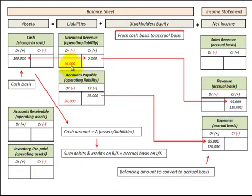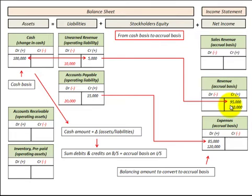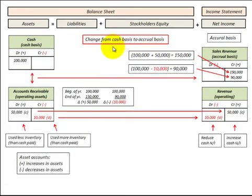We can do the same thing where we had a reduction of $10,000 in unearned revenue. Comparing that to our cash amount, we have a debit of $100,000 plus a debit of $10,000, so we need a crediting balance in revenue of $110,000. We take the cash amount, look at any change in assets or liabilities, and transfer that to a revenue or expense account — that balancing amount is our conversion from cash to accrual basis.